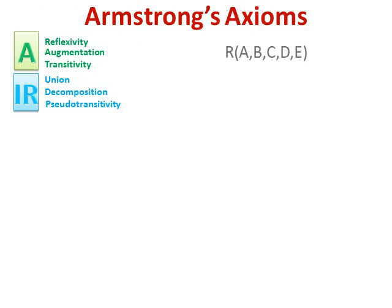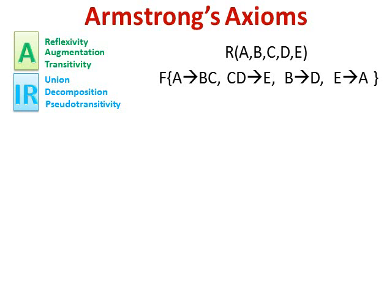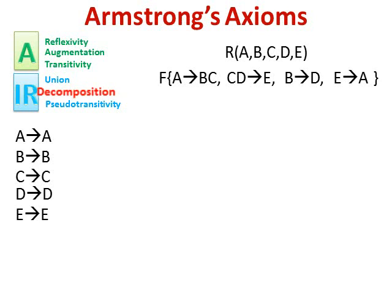Let's look at schema R with attributes A, B, C, D, and E, and a set of given functional dependencies: A determines BC, CD determines E, B determines D, and E determines A. Starting with Armstrong's first axiom, reflexivity: an attribute determines itself, so A determines A, B determines B, C determines C, D determines D, and E determines E. Using the decomposition inference rule, since A determines BC, we can logically imply A determines B and A determines C. Using the transitivity axiom, since A determines B and B determines D, then A determines D.